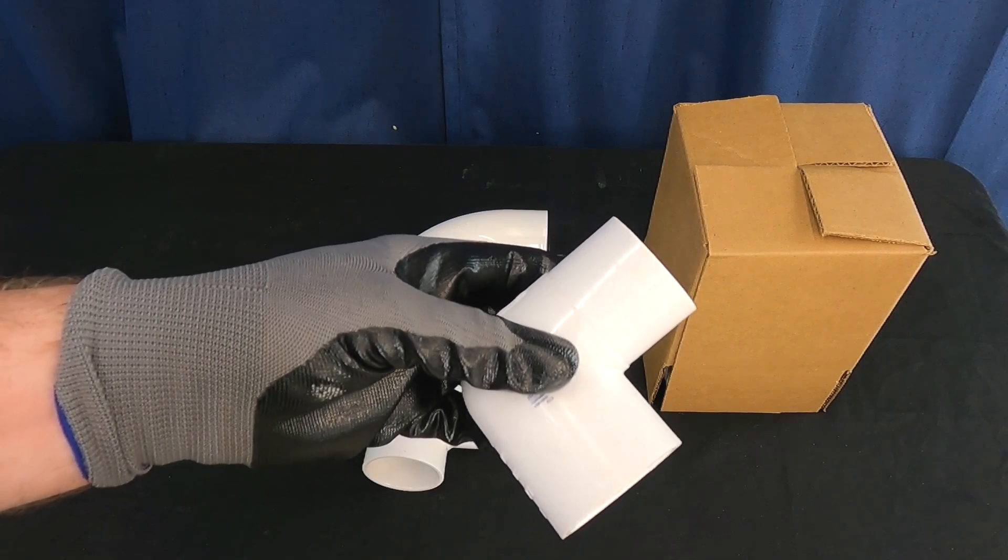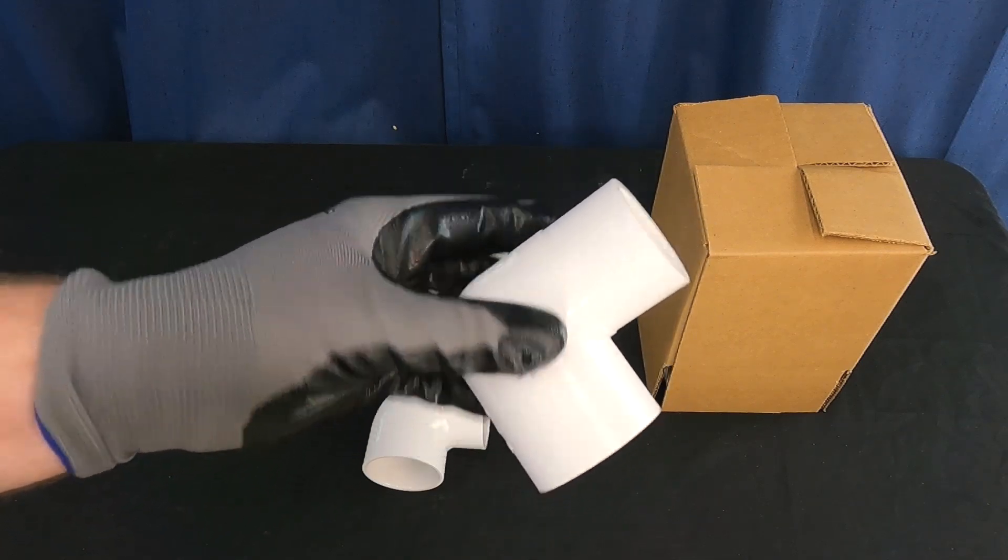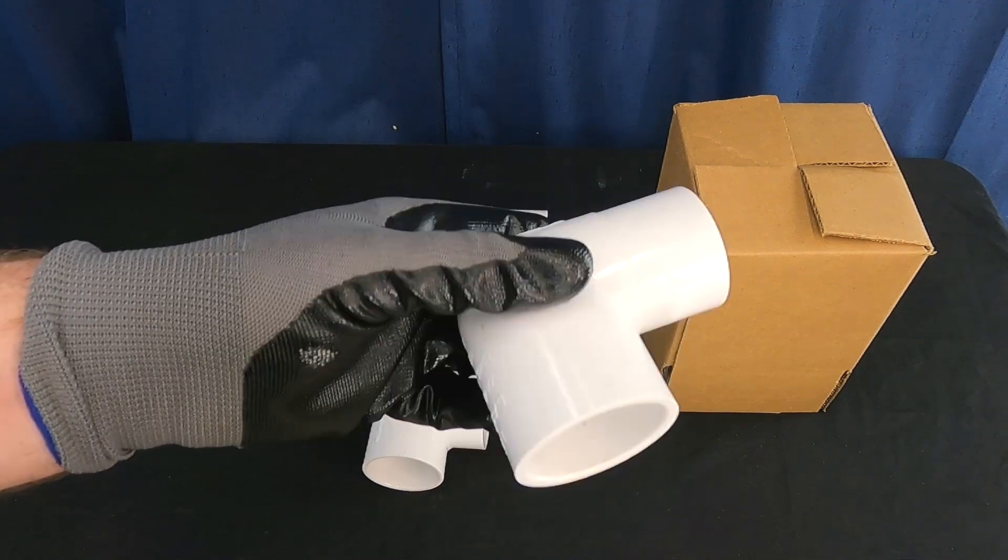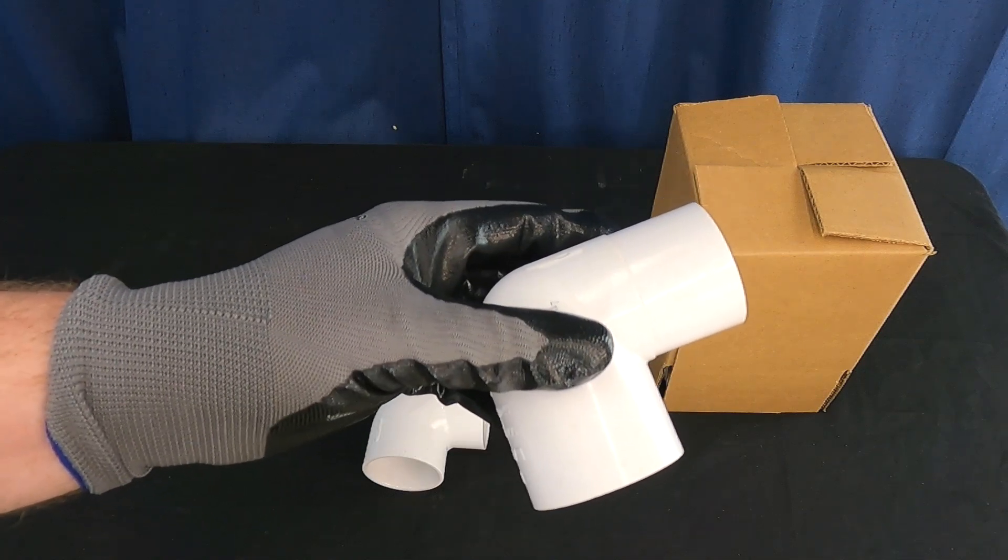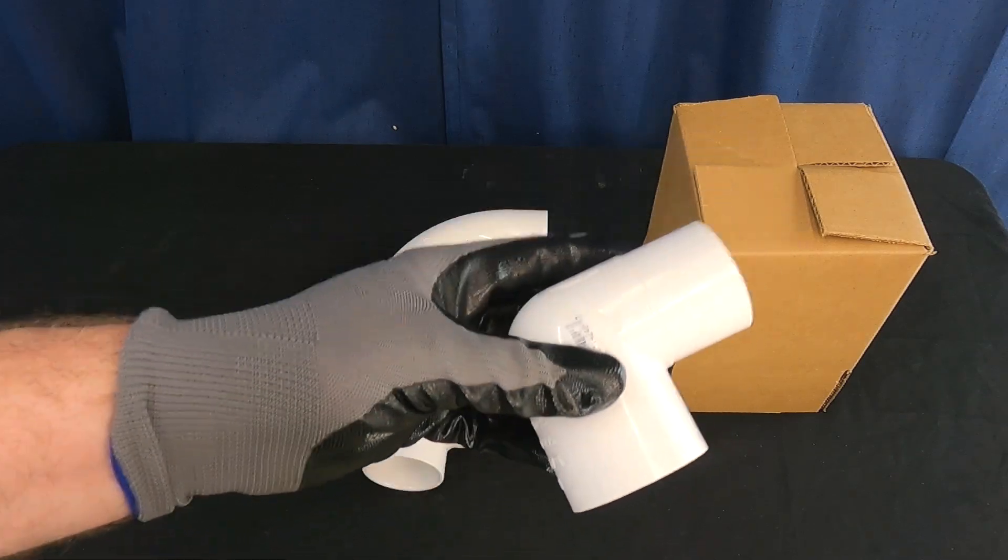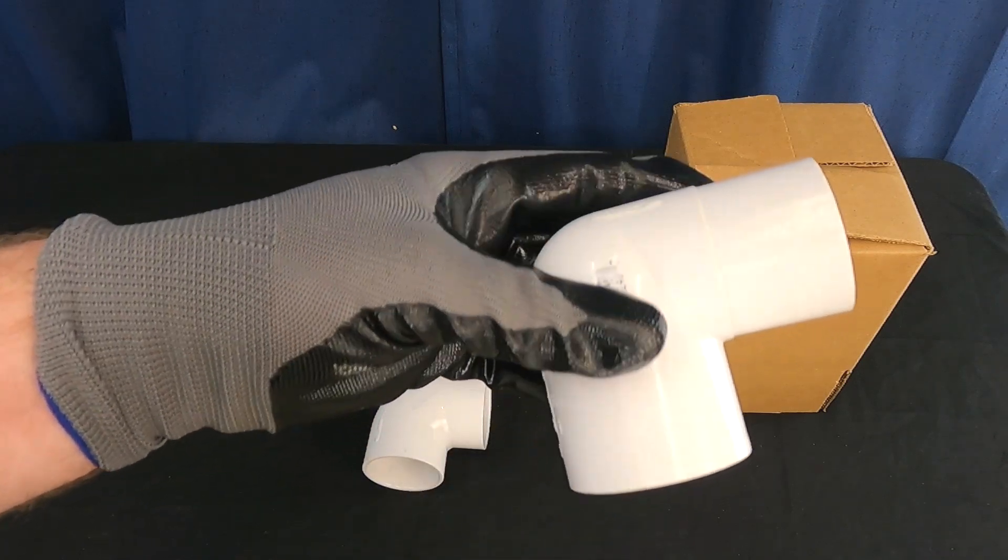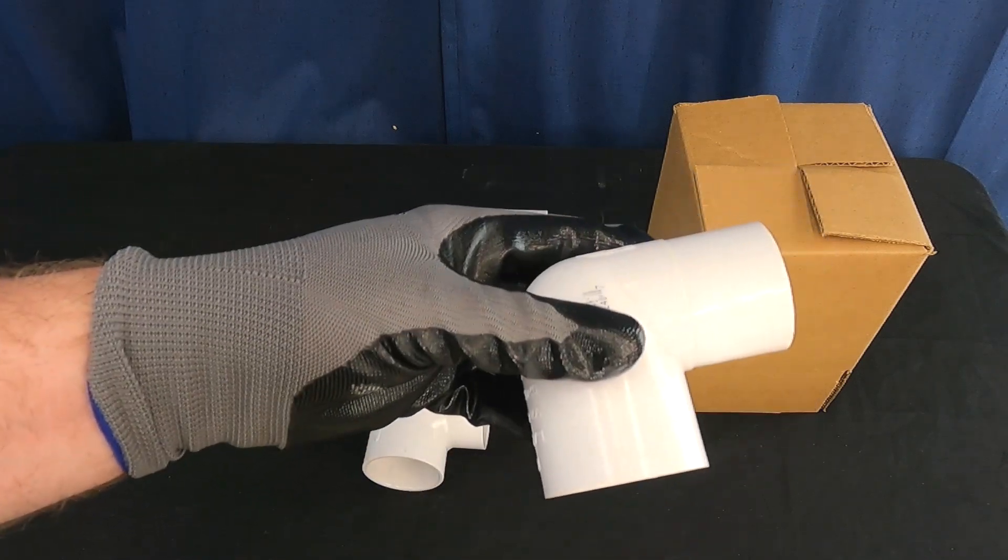So I went on a little bit of a tirade the better part of a decade ago, made a lot of content about these because builders and installers were using these as the only way that they would transition a 90 degree bend. Everything was done with street elbows and it made no sense to me at all. These were more expensive than short radius 90s. They're way worse in terms of the friction loss. They're just a terrible choice all around.